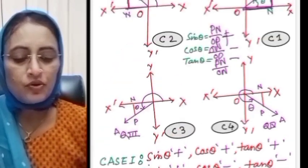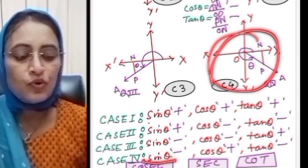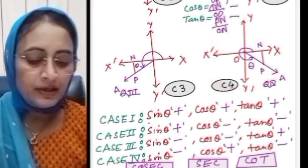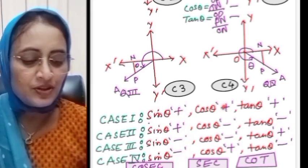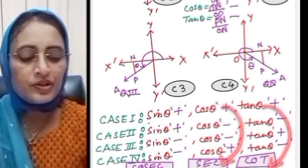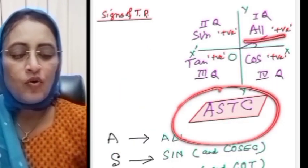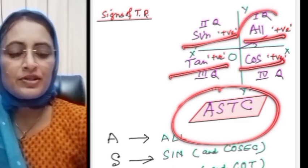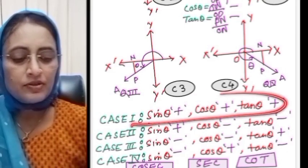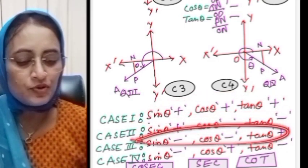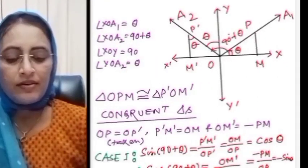Similarly in case three (third quadrant): sin theta negative, cos theta negative, tan theta positive. In case four (fourth quadrant): sin theta negative, cos theta positive, tan theta negative. This gives us the ASTC rule — All positive in Q1, Sin positive in Q2, Tan positive in Q3, Cos positive in Q4. A means all positive, S means sin positive, T means tan positive, C means cos positive.